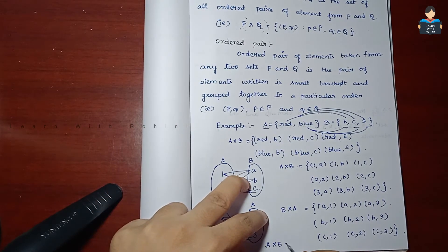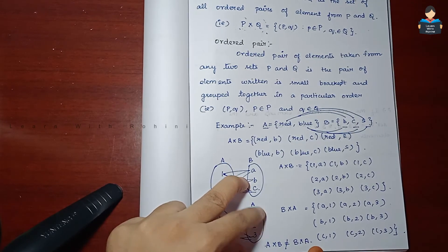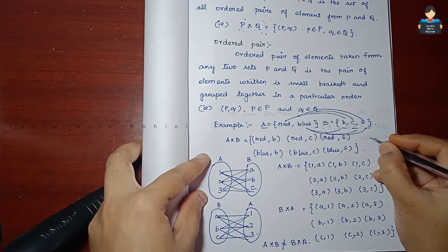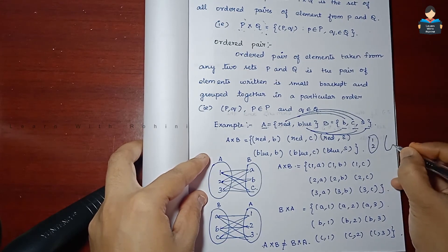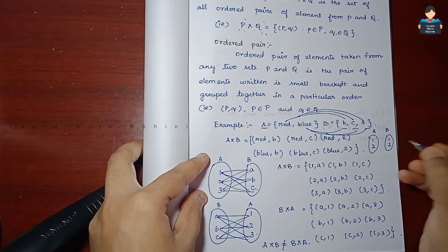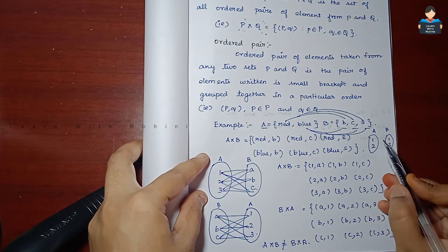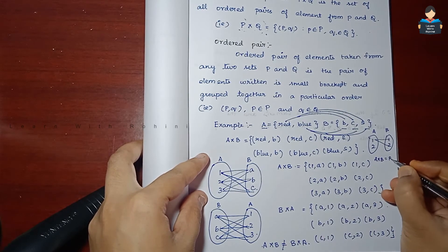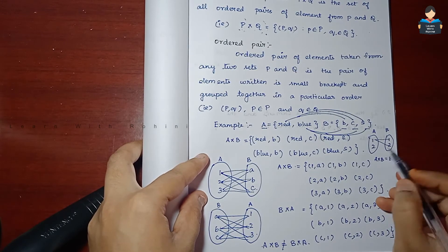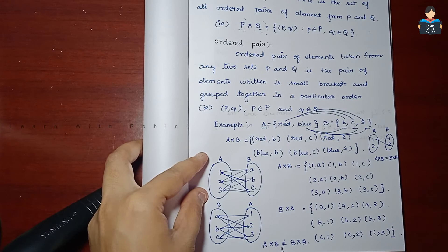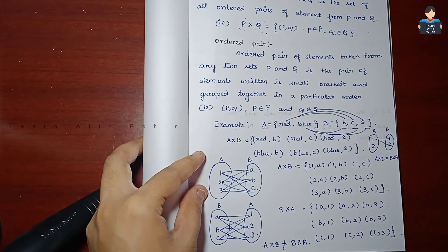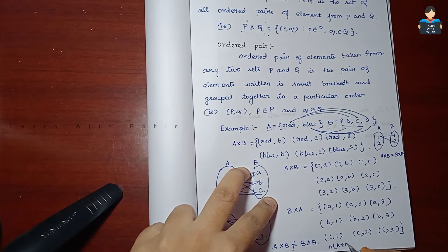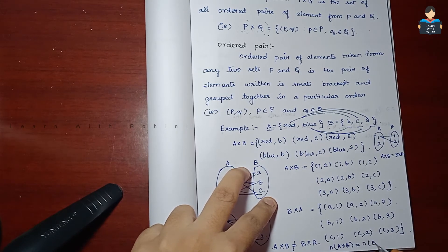A cross B is not the same as B cross A unless the elements of A are the same as the elements of B. If they have the same elements, then A cross B equals B cross A. Otherwise, A cross B is not equal to B cross A. However, n of A cross B is always equal to n of B cross A.